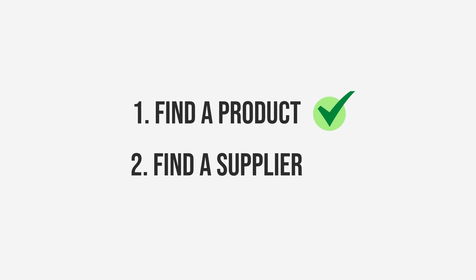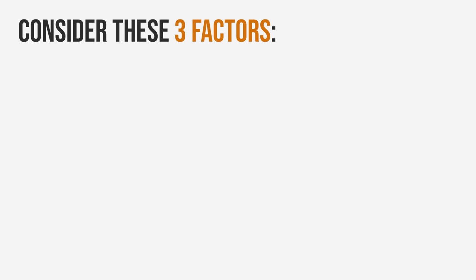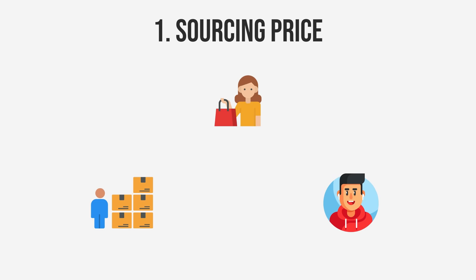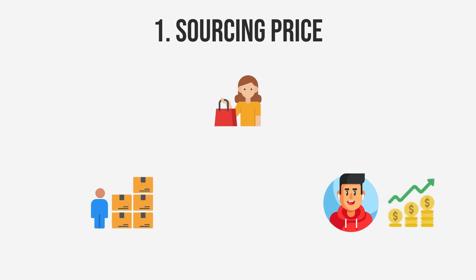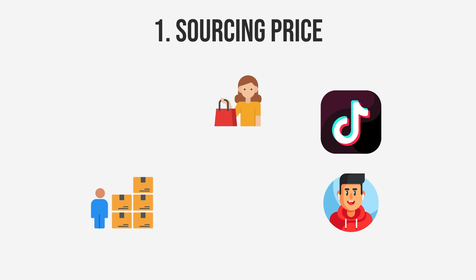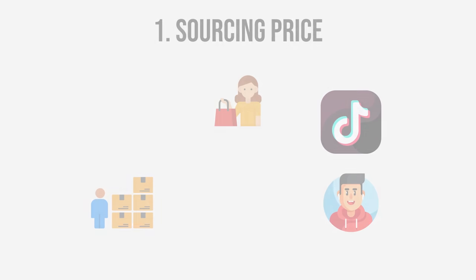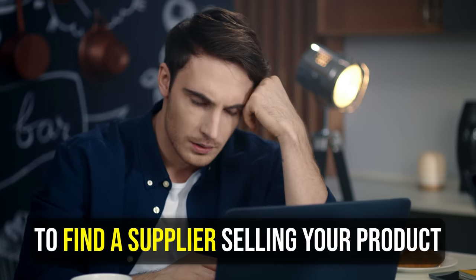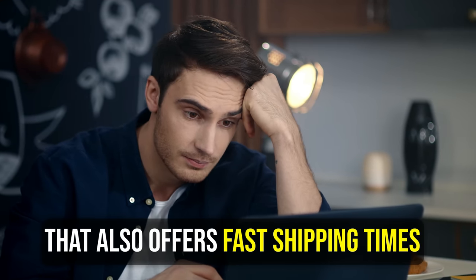Once we find a good product, the next step is to find a good supplier. There are three factors to consider: sourcing price, shipping time, and product quality. Sourcing price means how much you pay the supplier to get the product shipped to the customer — we want to sell for at least three times what we paid, giving us enough margin to be profitable after advertising costs. If you're going with free traffic methods like TikTok Organic, you can get away with a lower margin. When it comes to shipping time, obviously the faster the better. It can be quite a challenge to find a supplier with a good price that also offers fast shipping times.